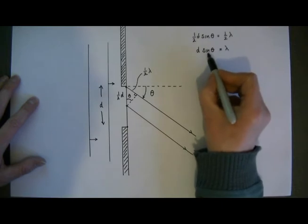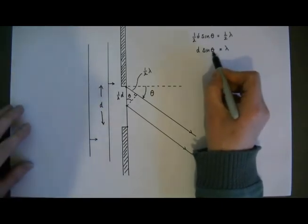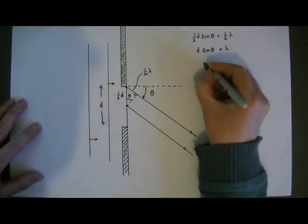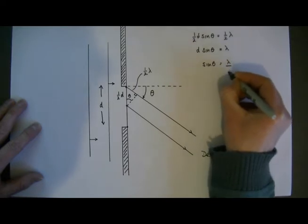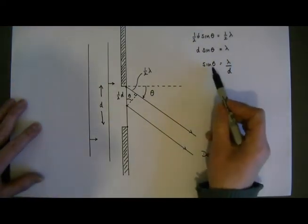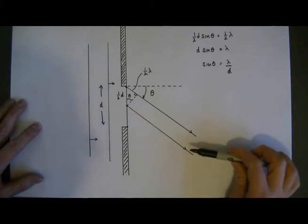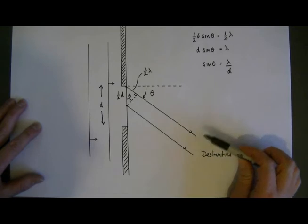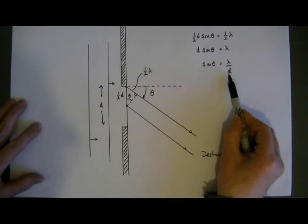If I think about how the slit width d affects the angle theta, I can say that sin θ = λ/d. So the sine of the angle is inversely proportional to d. This means the first minimum — the first destructive interference — will occur at a larger angle as d gets smaller, because they are inversely proportional.